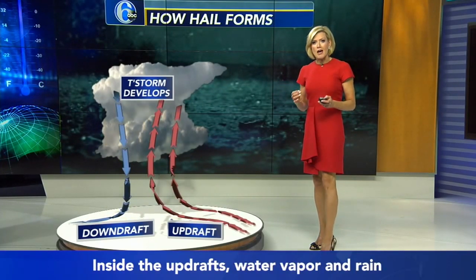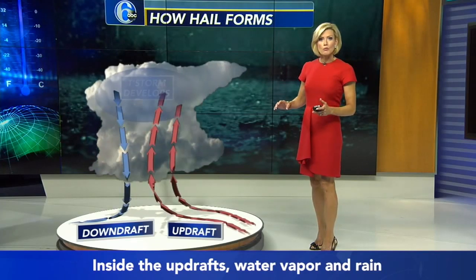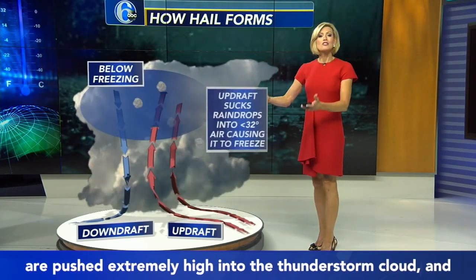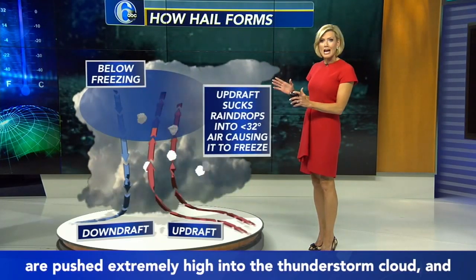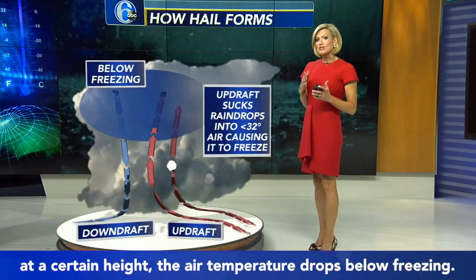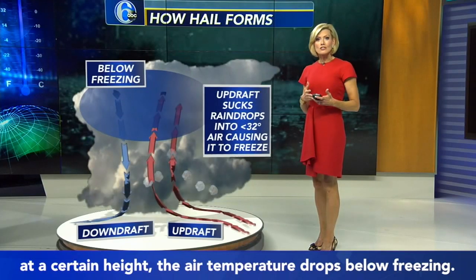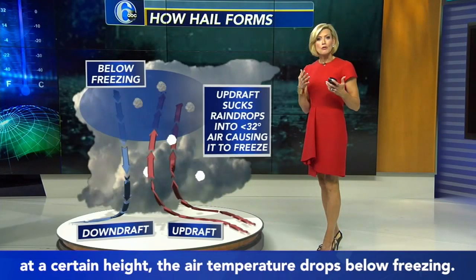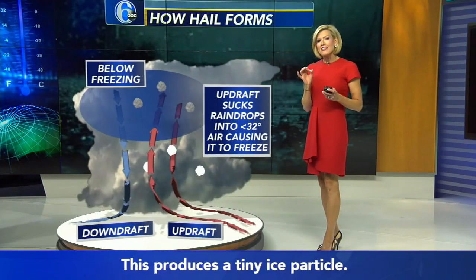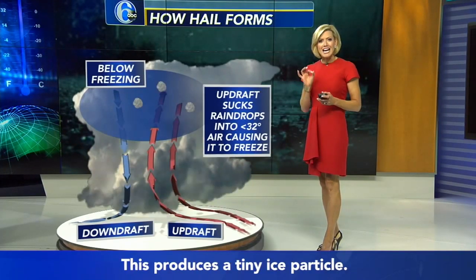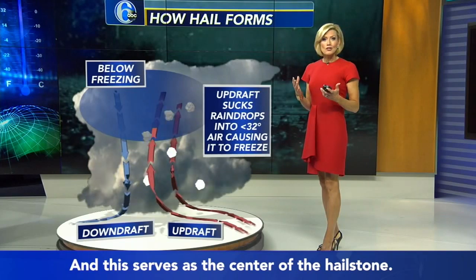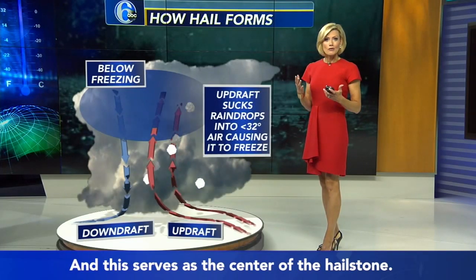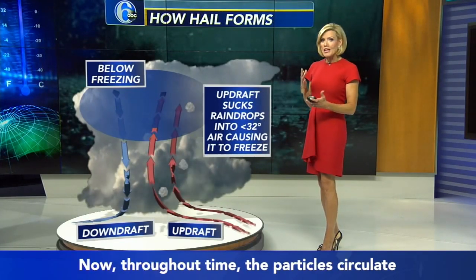Inside the updrafts, water vapor and rain are pushed extremely high into the thunderstorm cloud, and at a certain height the air temperature drops below freezing. This produces a tiny ice particle, and this serves as the center of the hailstone.